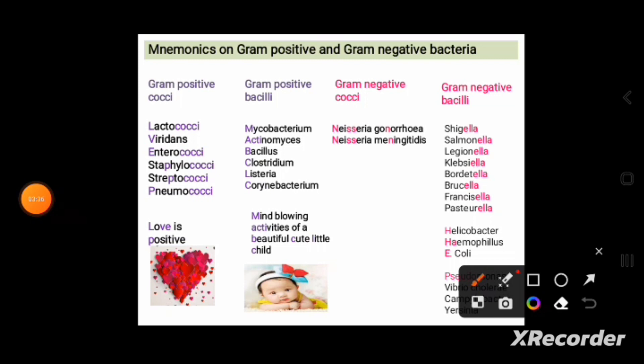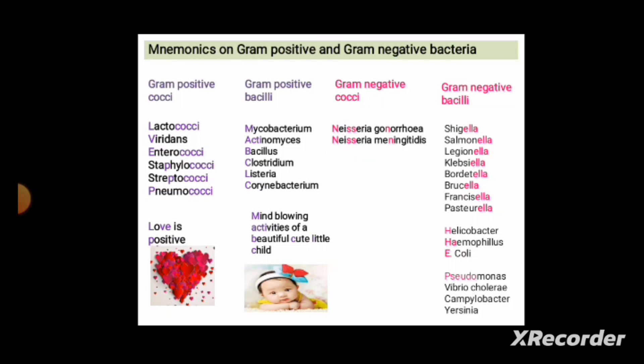Next is gram-negative cocci. To remember gram-negative cocci, think of Neisseria — N is the first letter, and 'negative' also starts with N. In 'cocci' there is a double C; in 'Neisseria' there is a double S — so you can remember gram-negative cocci. Note that Neisseria is also known as Meningococci.